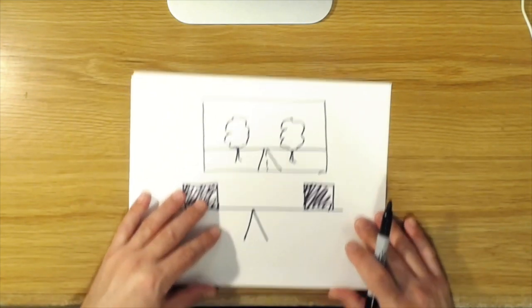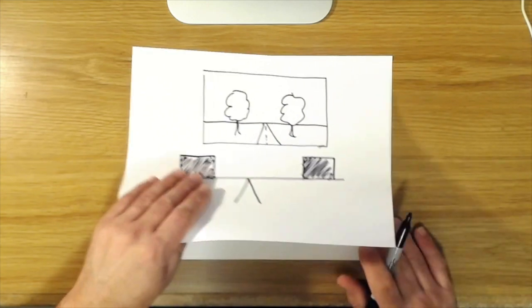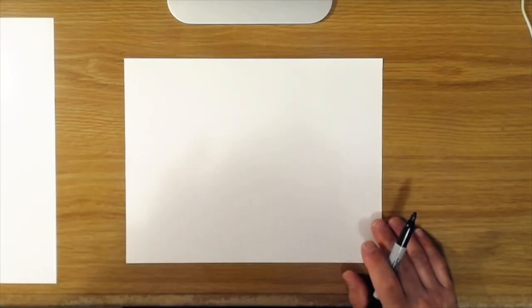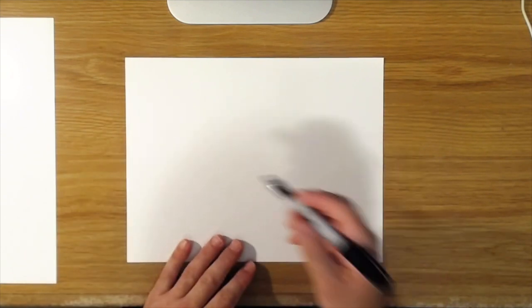So the thing to look for in your compositions is what we call asymmetrical balance. So it's still balanced but it's asymmetrical, so it's both visually balanced but also pleasing and interesting.